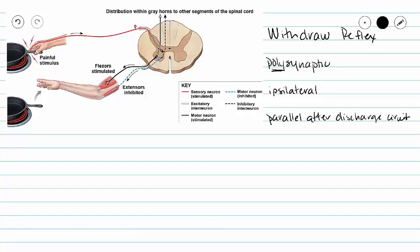We're going to see the use of multiple interneurons here. This reflex is also ipsilateral, meaning our stimulus and our movement or outcome is on the same side of the spinal cord.